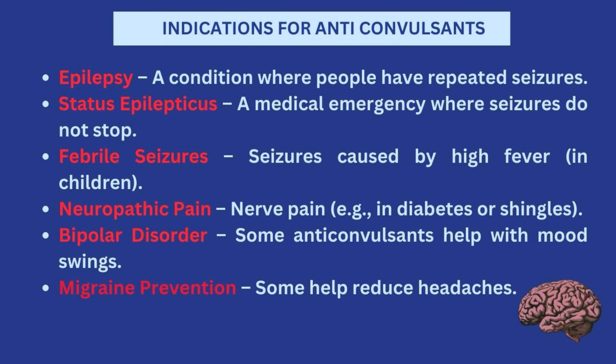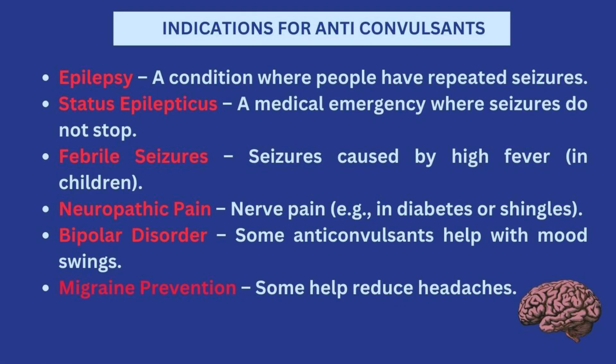Anti-convulsants could also be used in cases of neuropathic pain, when the person has a lot of nerve pain and you're trying to prevent them from going into seizures. They can also be used in bipolar disorder, where somebody has episodes of high moods and low moods alternating — two opposite types of moods. Anti-convulsant medications are one of the classes used in the treatment of bipolar disorder. They can also be used to prevent migraines, as some anti-convulsants help reduce headaches.